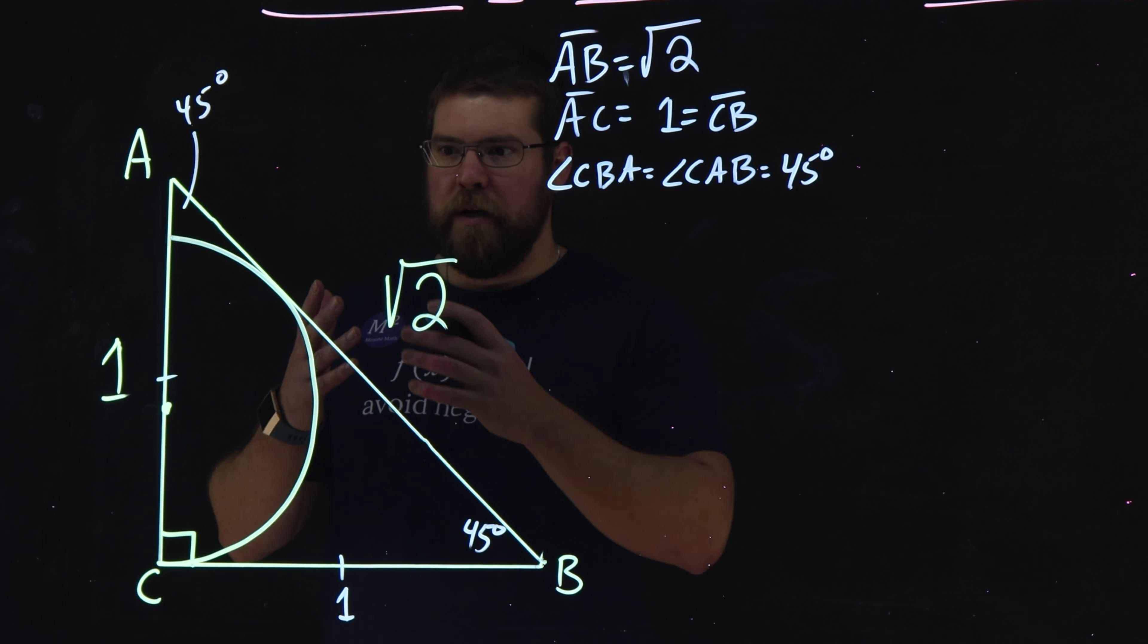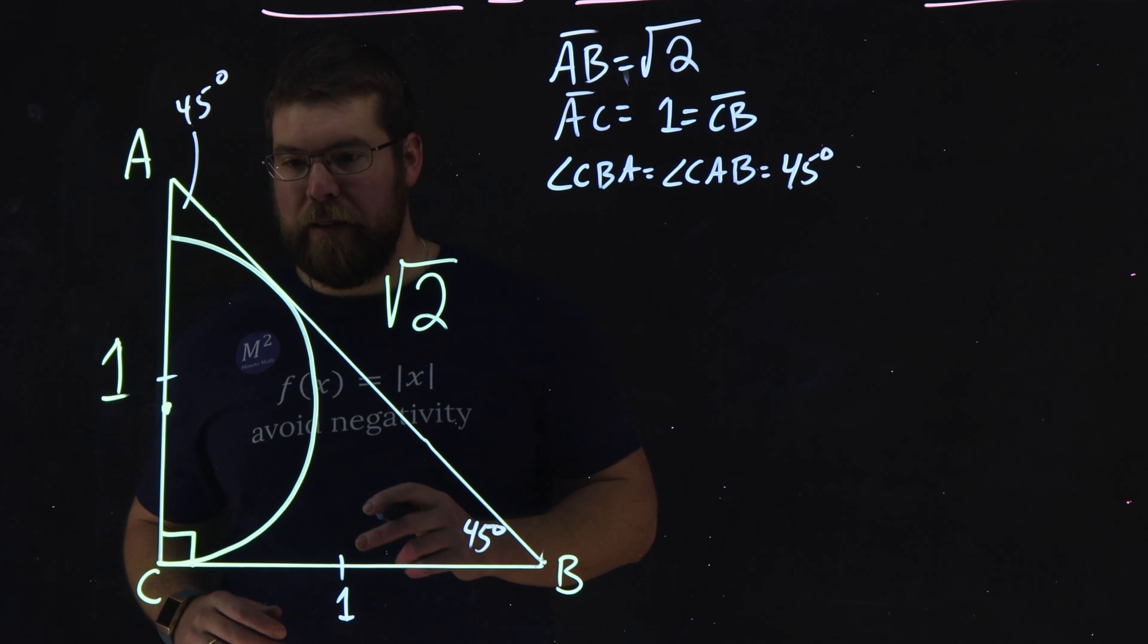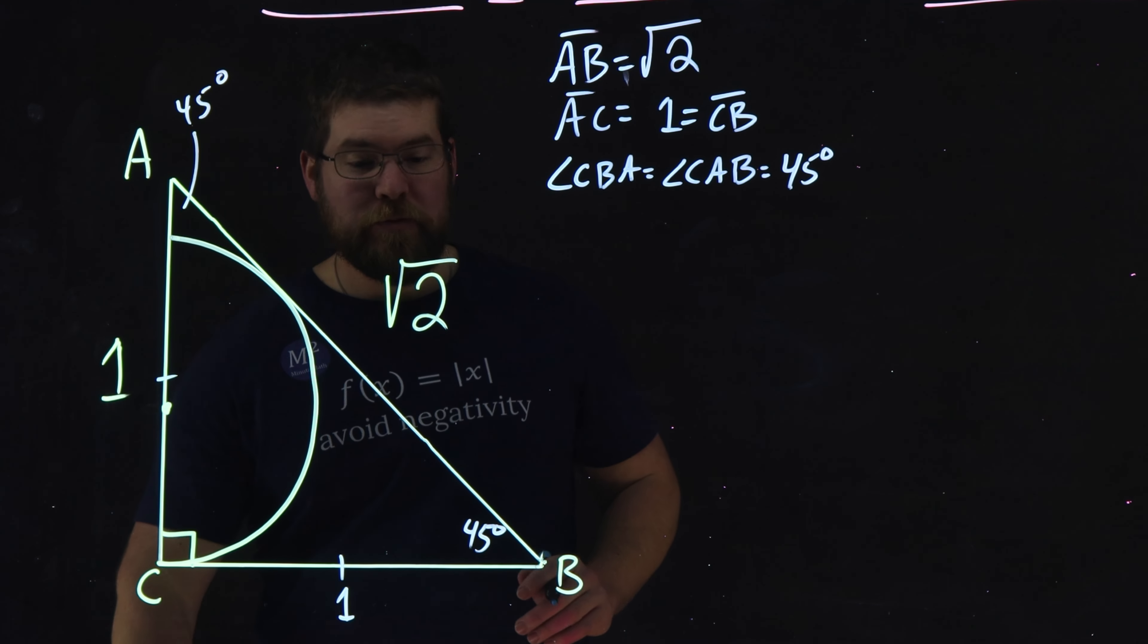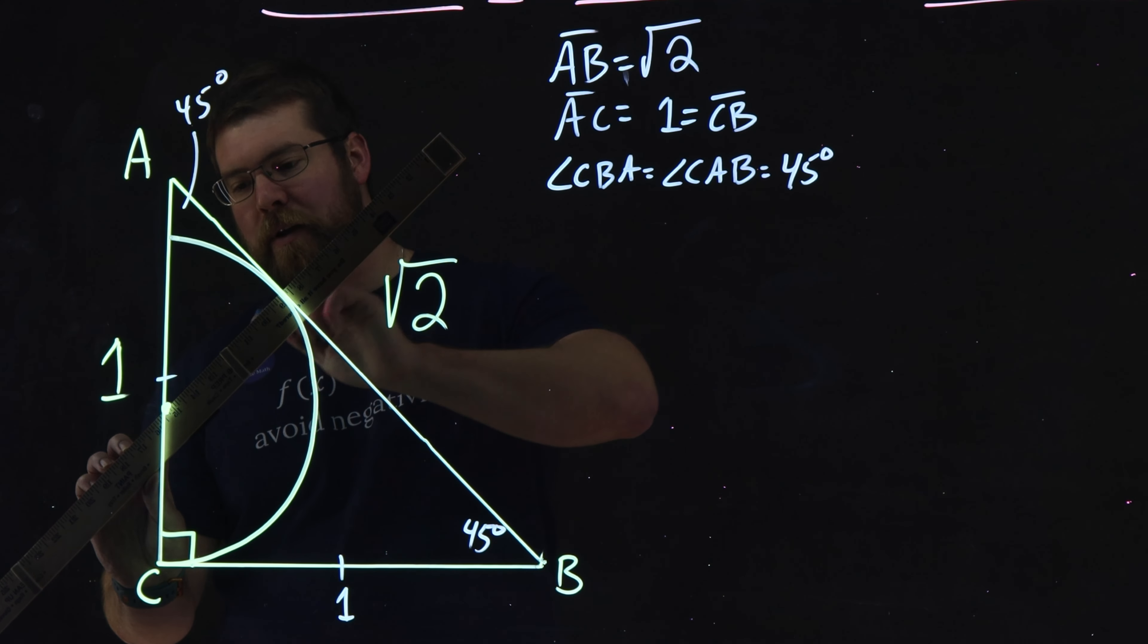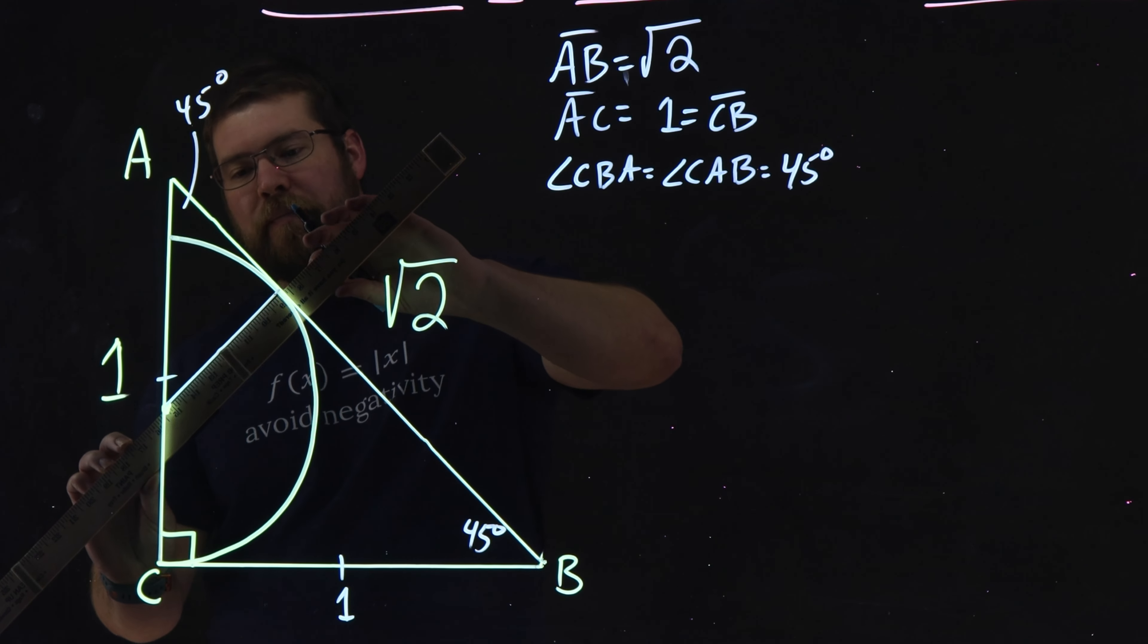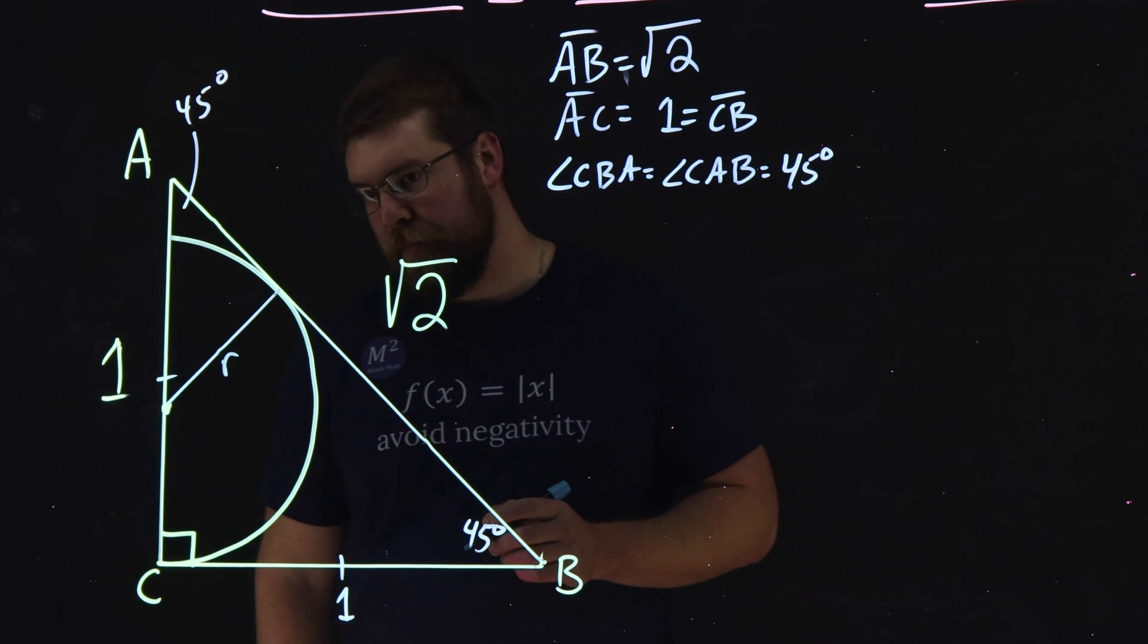Now let's go draw our radius to this point of tangency that's happening right there. If I can do it freehand. You know, I got this nice little handy ruler. Let's just do it, make it all nice and clean. All right, we got our radius here. We don't know what that is. Let's call it R.